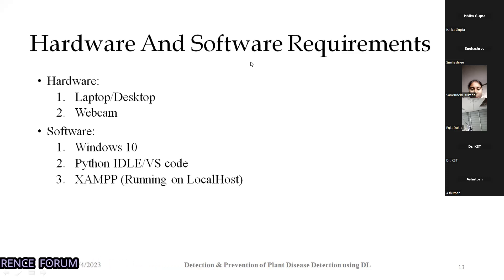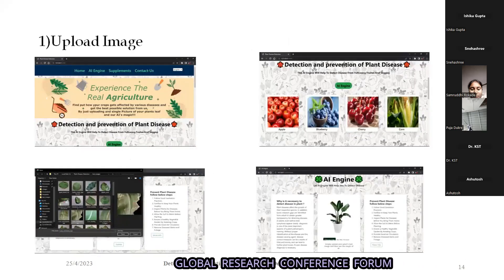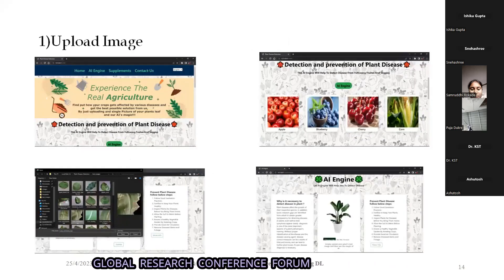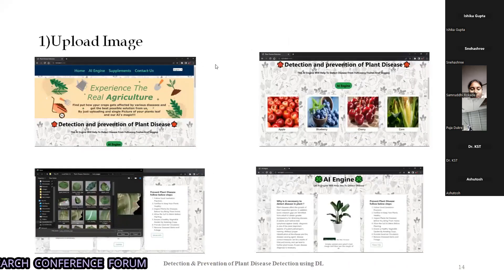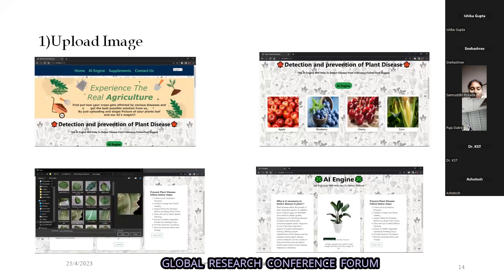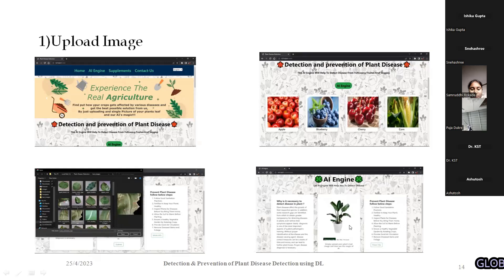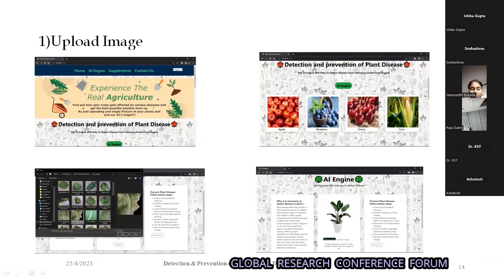We use Python and XAMPP server as the hardware and software for this project. Here is a screenshot of our website. In the first step, the farmer uploads the image of the leaf on the website. After uploading the image, the farmer can click the Predict button and wait for the result.